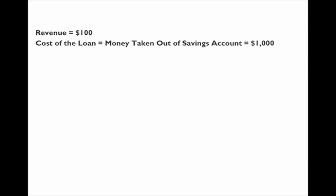Let's say the revenue that John makes is one hundred dollars, and the cost of the loan — which is also the money he takes out of the savings account to pay off the loan — is one thousand dollars. The interest rate on both the loan and the savings account is three percent, so the interest on the loan is thirty dollars per time period.